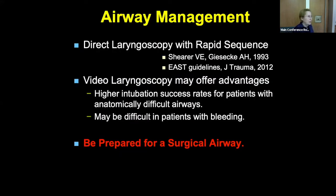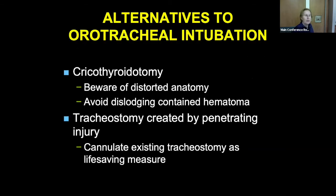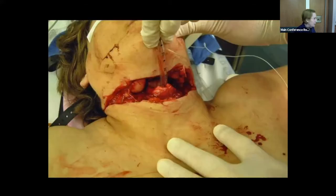We used to do direct laryngoscopy for all of these. Video laryngoscopy is helpful, but if these patients have hematomas or intraoral bleeding, the video laryngoscopy is worthless — you can't see anything. Size up what you have and use the appropriate method. Be prepared for a surgical airway. When these patients come in, I start looking at their neck and where my incision is going to be. Cricothyroidotomies in these patients are often even more difficult than usual because you may be cutting into a big hematoma and the airway is distorted. If you see a big hole and a tracheotomy already available, grab it, secure it, and put the tube in.